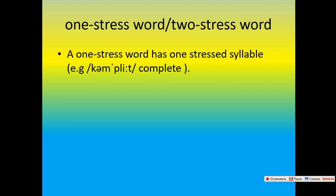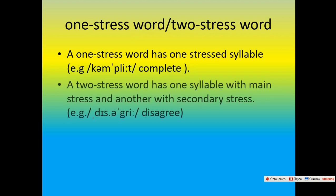A one-stress word has one stressed syllable. For example: complete — we see here one stressed syllable. A two-stress word has one syllable with main stress and another with secondary stress. For example: disagree — this is the main stress and the secondary stress is on 'dis'.